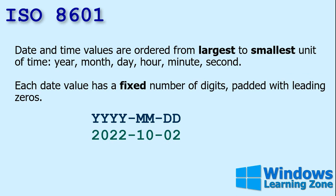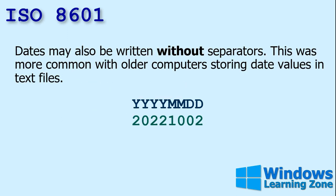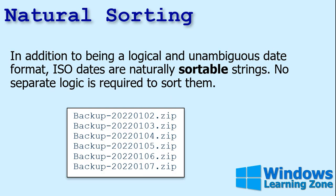ISO 8601 is the most logical way to format a date. Date and time values are ordered from the largest to the smallest unit: year, month, day, hour, minute, second. Each date value has a fixed number of digits padded with a leading zero, so you'll never see 2022-1-2 — it's always 01-02. Dates may also be written without separators, which was more common in older computers when using text files to store dates.